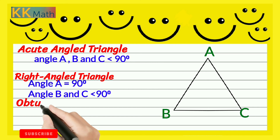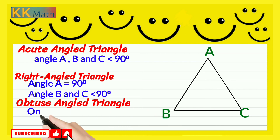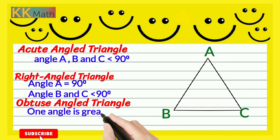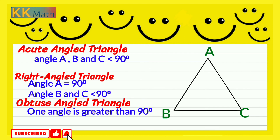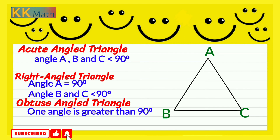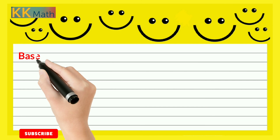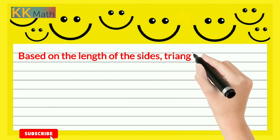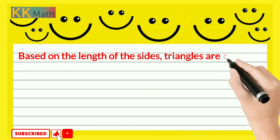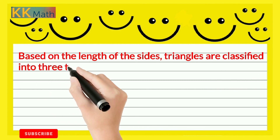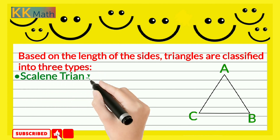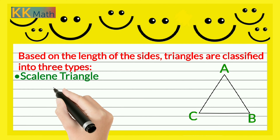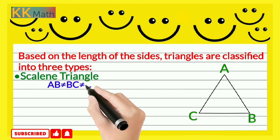Third one is obtuse angle triangle: a triangle that has one angle that measures more than 90 degrees is an obtuse angle triangle. Now the second part is based on the length of the side. Triangles are classified into three types: scalene triangle, isosceles triangle, and equilateral triangle. Now let us discuss each type in detail.